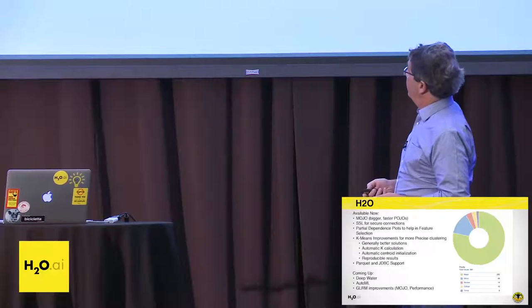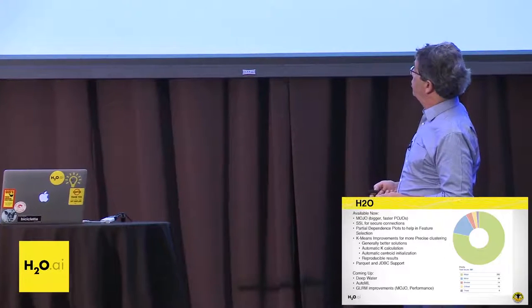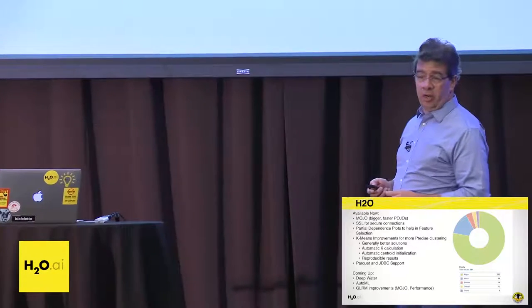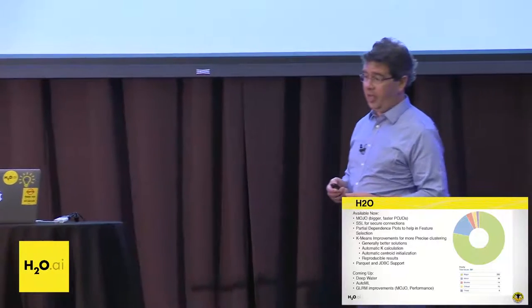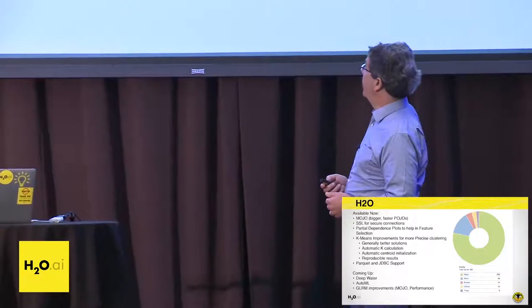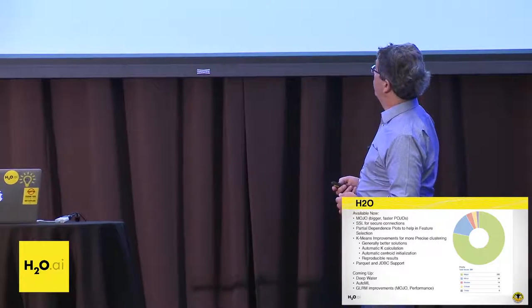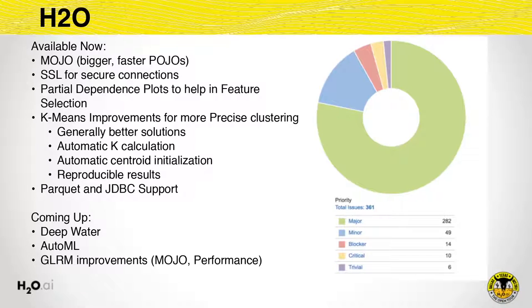Right now the MOJO is available for GBM and DRF. We also have support for GLRM coming up very soon — it's actually in a pull request at the moment, and we should get it into the next release.